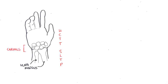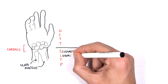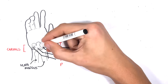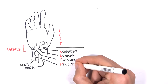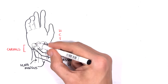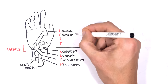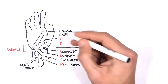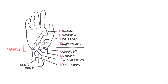So S is for scaphoid, L for lunate, T for triquetrum, P for pisiform. Moving up: H is for hamate, C for capitate, and then trapezoid and then trapezium.